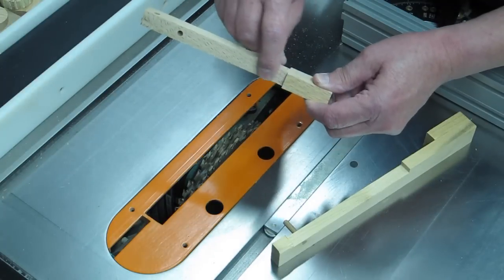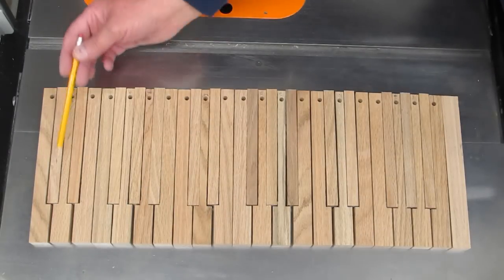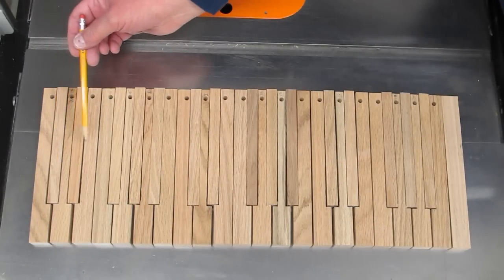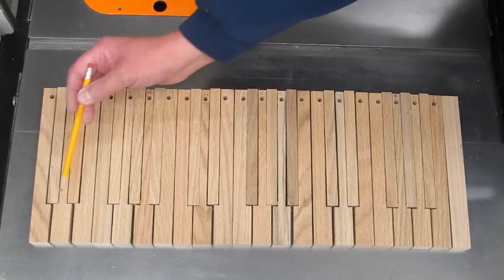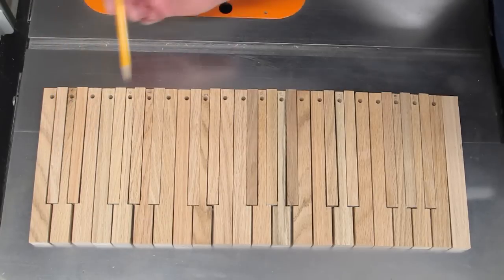And now we have the notch for one of the black keys. All the white keys have been notched to clear the black keys. I just need to clean up these edges a little bit and then make the tops for the black keys on a walnut.